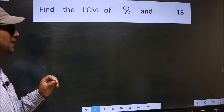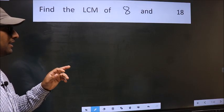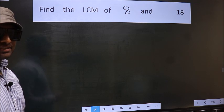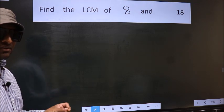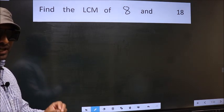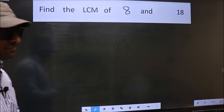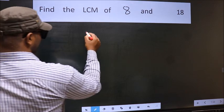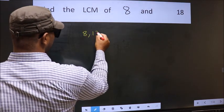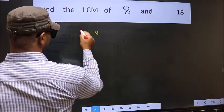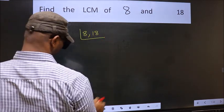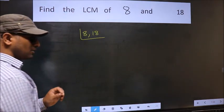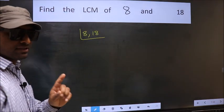Find the LCM of 8 and 18. To find the LCM, first we should frame it in this way — that is 8 and 18. This is your step 1.